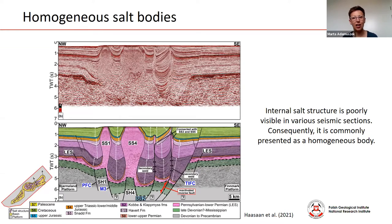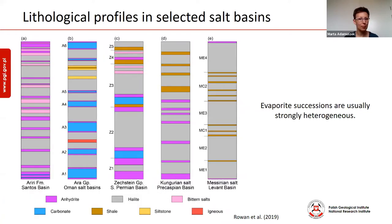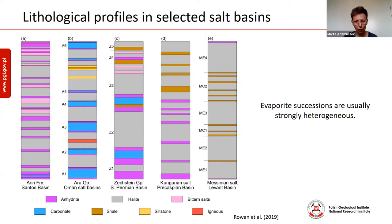Internal structures are usually poorly visible in seismic data. Consequently, in seismic sections, the evaporite sequence is presented as a homogeneous body. Moreover, in various analog or numerical models, the rheology of halite is considered as representative for the whole evaporite sequence. Evaporites are in fact strongly heterogeneous. Here I present examples of lithological profiles in selected salt basins where the evaporite succession comprises a range of interbedded rocks such as carbonates, sulphates, and chlorites. They can also contain intercalations of sedimentary rocks or igneous rocks.